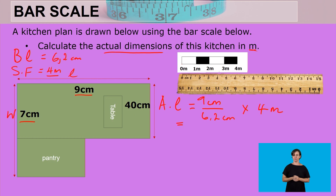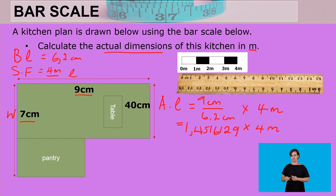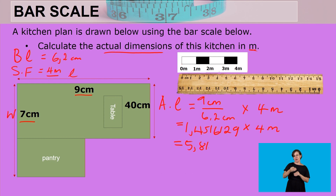Nine divided by 6.2 gives us 1.45161290, then multiply by 4 meters. That gives us 5.806, which rounded to two decimal places is 5.81. So the actual length of this kitchen is 5.81 meters.